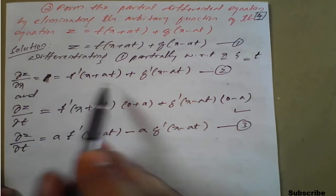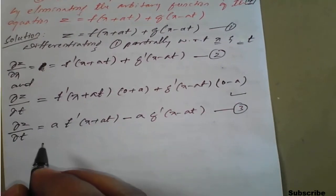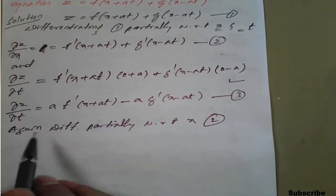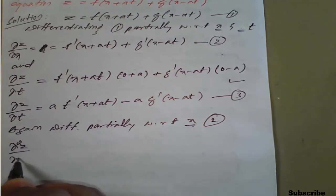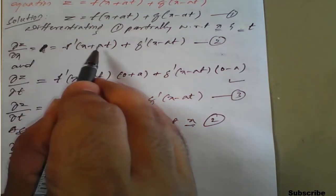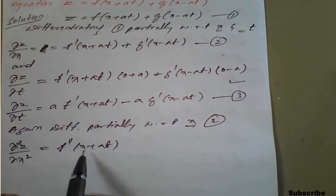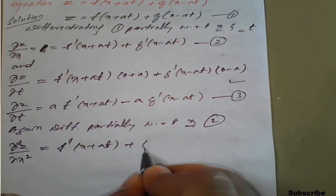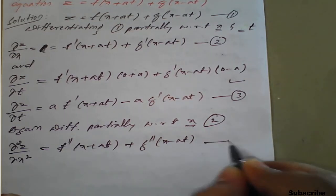Since we cannot eliminate two functions from just these two equations, we differentiate again. Differentiating Equation 2 partially with respect to x: ∂²z/∂x² = f''(x + at) · 1 + g''(x - at) · 1 = f''(x + at) + g''(x - at). This is Equation 4.